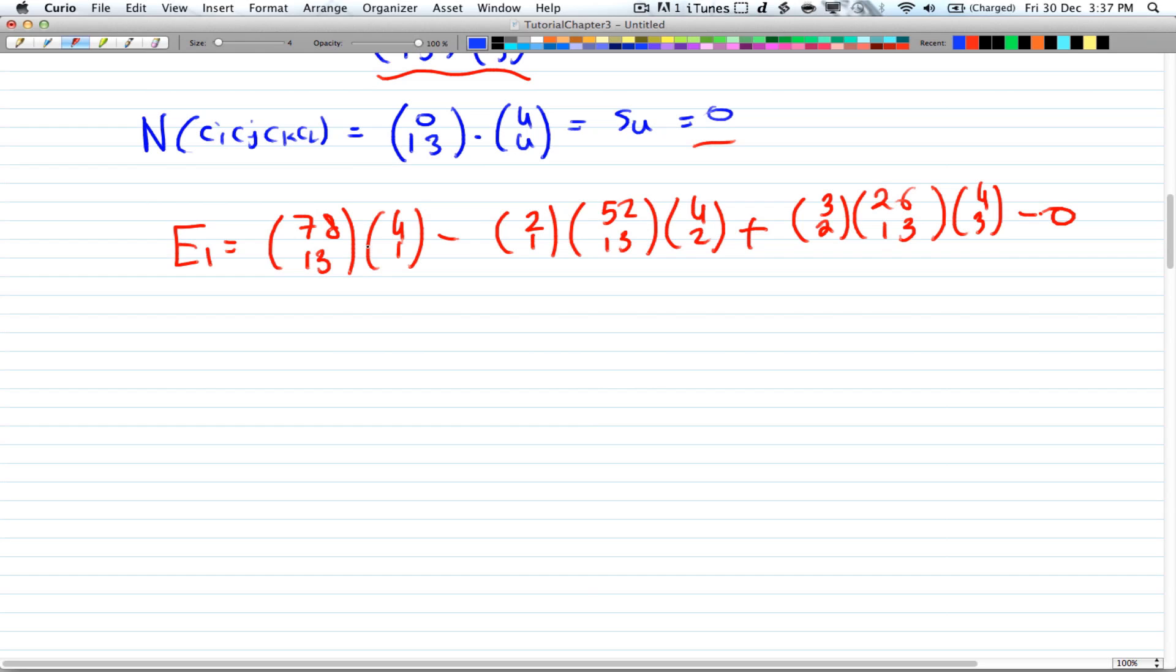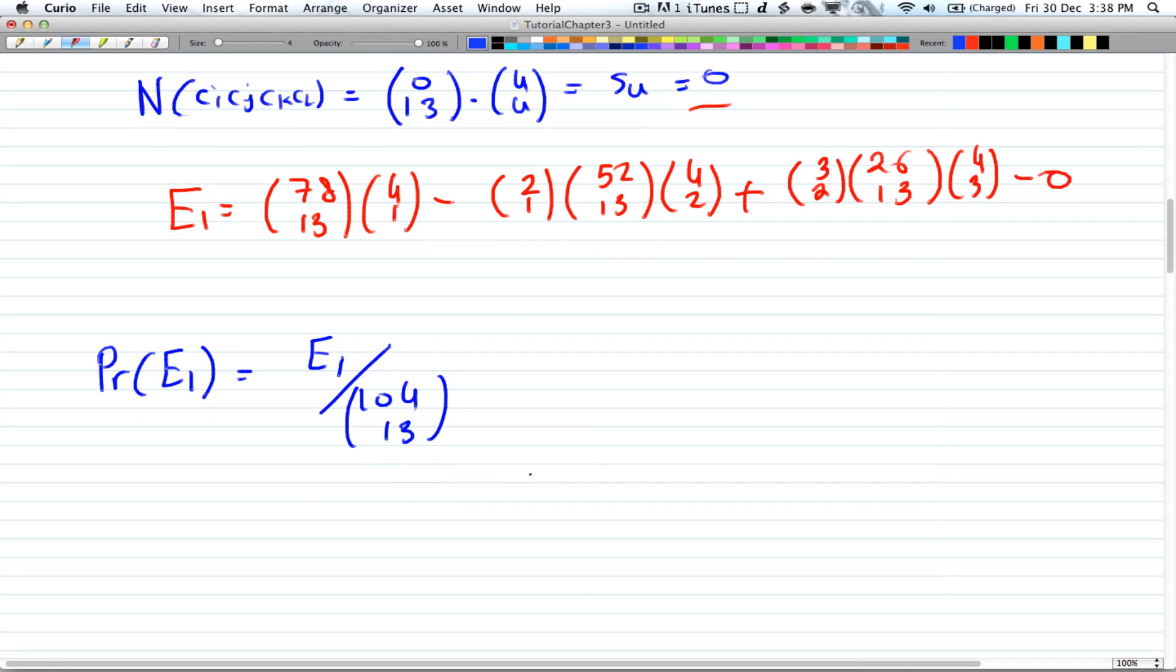But remember we're being asked for the probability. So the probability that we get exactly 1 void, so the probability of e_1 equals e_1 divided by 104 choose 13. And just like I mentioned before, 104 choose 13 is the number of ways you can pick 13 cards from 104 cards and that's the entire space we have.